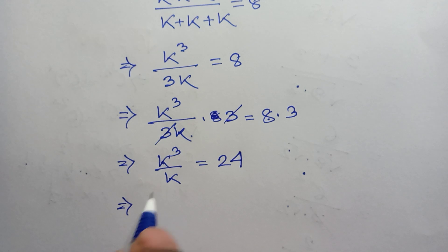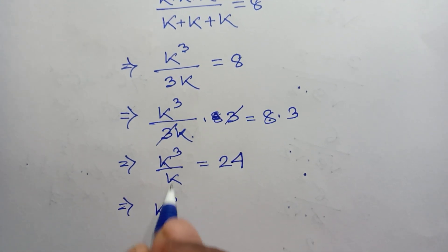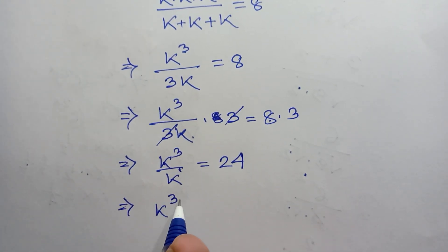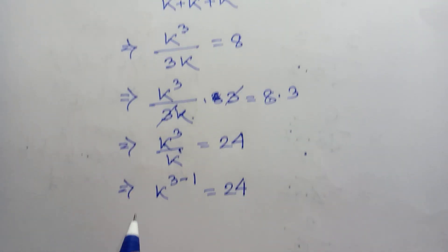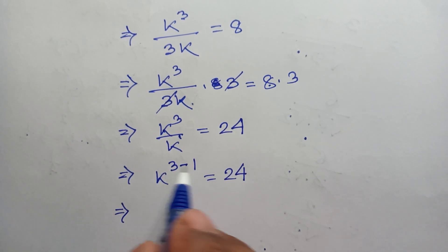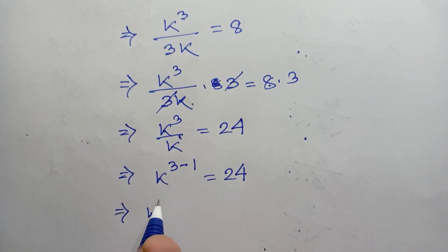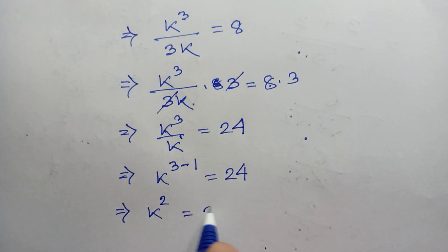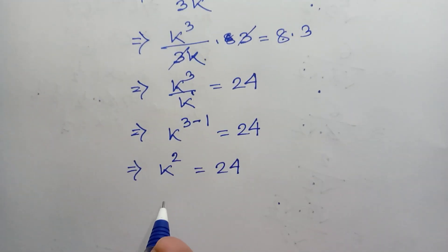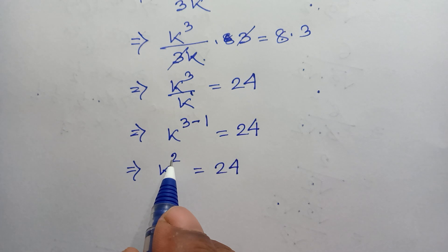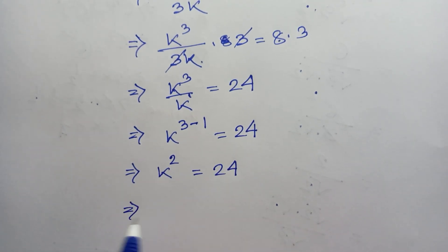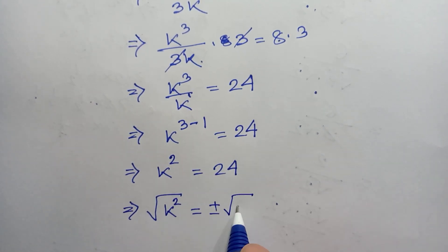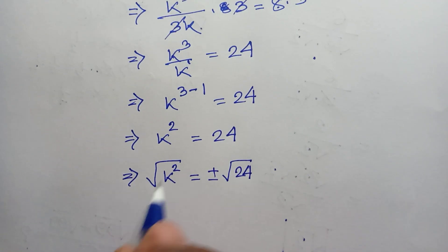Now both bases are the same, so we can write k cubed over k as k to the power 3 minus 1, which is k squared, equals 24. We need the value of k, so we remove this square by taking the square root of both sides.